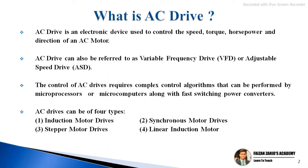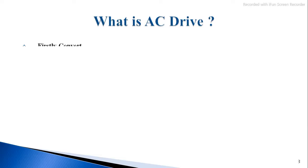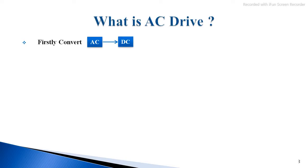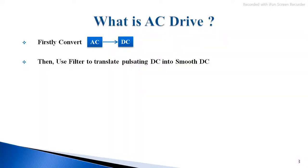Now let us discuss how AC drives work. Firstly, AC is converted into DC using a rectifier. Then a filter is used to translate pulsating DC into smooth DC, because after rectification the output we get is pulsating DC. So to convert that pulsating DC into smooth DC, we use a filter.